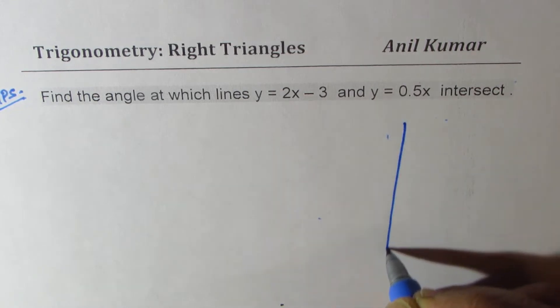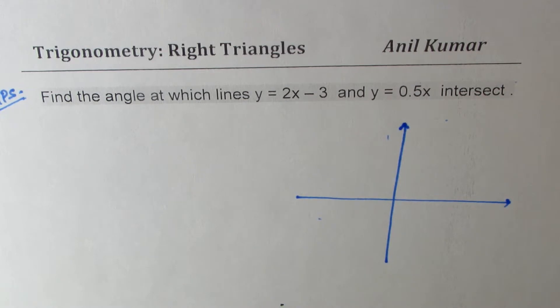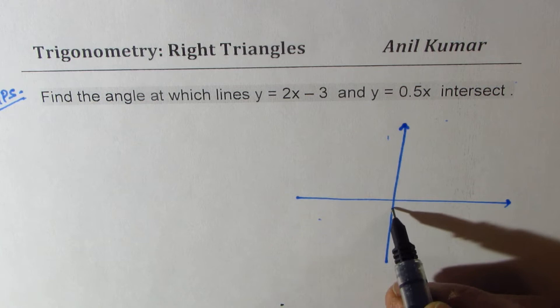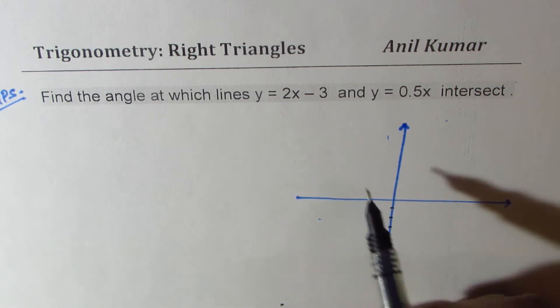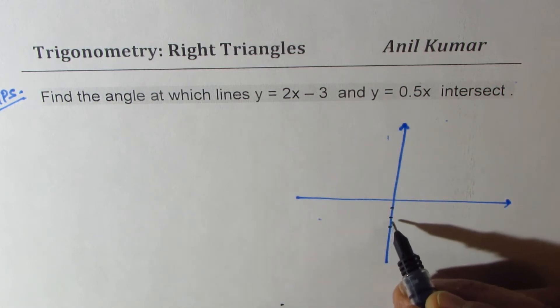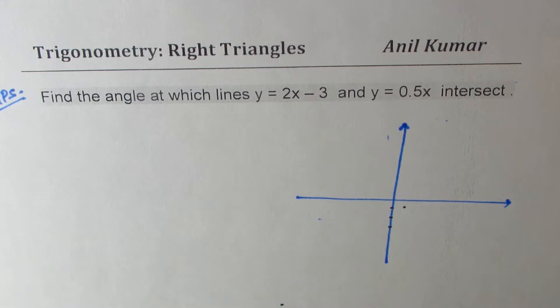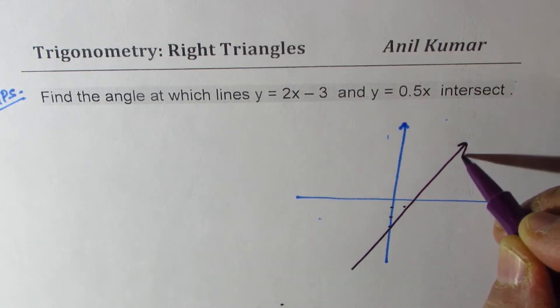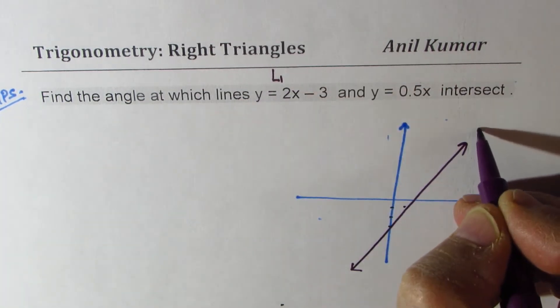Let us first sketch and then we'll solve the particular question. So y equals 2x minus 3 means the y-intercept is at minus 3 and slope is positive 2. So next point will be 2 up, 1 right. So we get this line. Let me sketch one of these lines. We are making rough sketches here, but it serves the purpose. So this is our line 1.